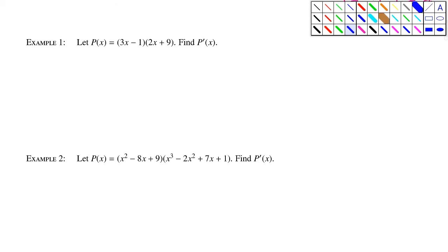Example number one: let p of x equal 3x minus 1 times 2x plus 9. Find p prime of x. The first thing you might notice is that you could multiply these terms out to get one big long string and then take the derivative, and that would work. But we're using the product rule in this section, so I start with an easy example to demonstrate it.